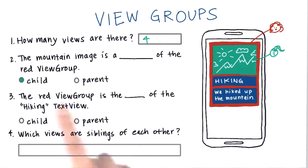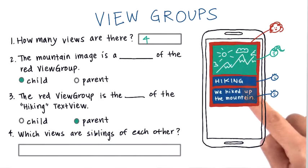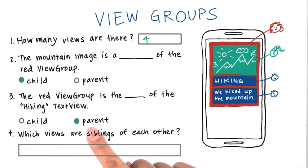So I circle this one in. Number three, the red view group is the child or parent of the hiking text view. If I draw in more faces, then we see that the red view group is the parent of the hiking text view. So we circle this in.